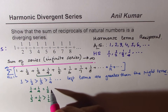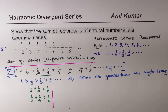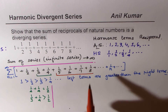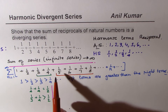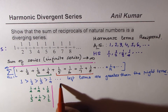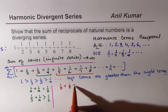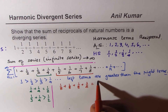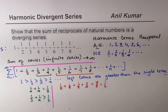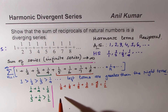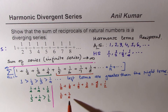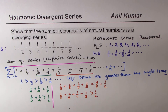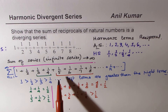Now let me take the next four terms. We know that one over eight plus one over eight plus one over eight plus one over eight equals four over eight, which equals half. But since the left terms are greater, one over five plus one over six plus one over seven plus one over eight should be greater than half. So the combination of those four terms is also greater than half.